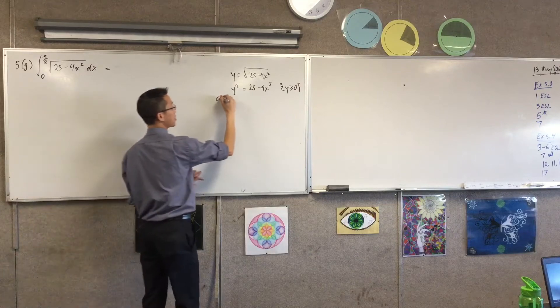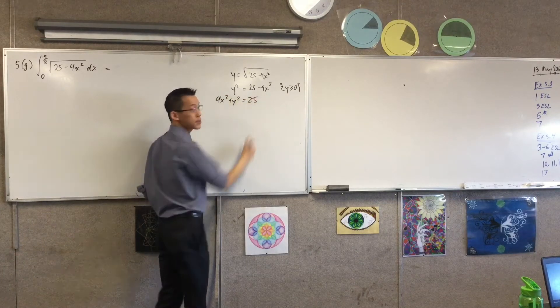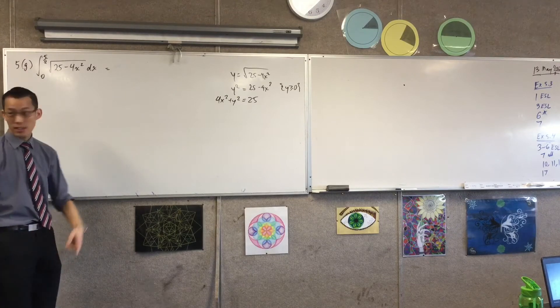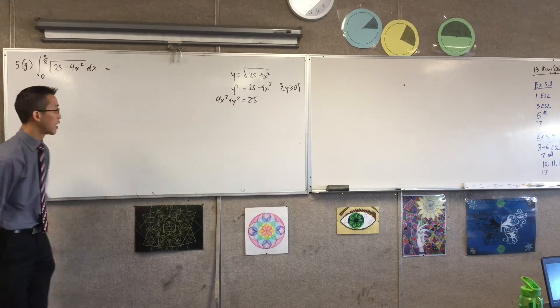This is an ellipse, right? It's super easy to see once you have it like this. So it's been squashed together. It's like a circle and you've crammed it in four times.